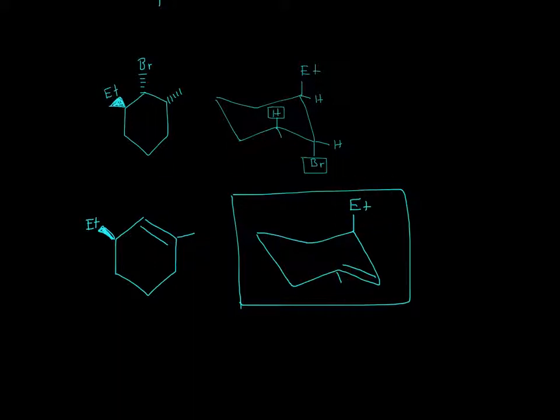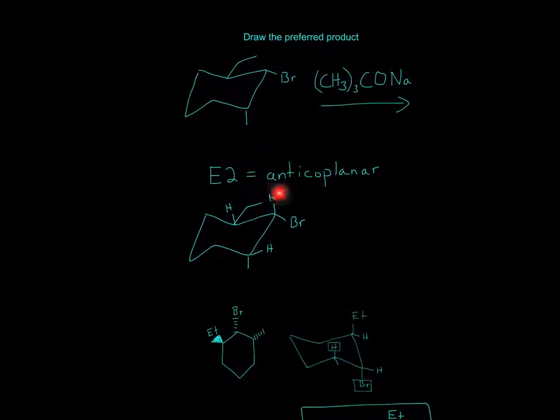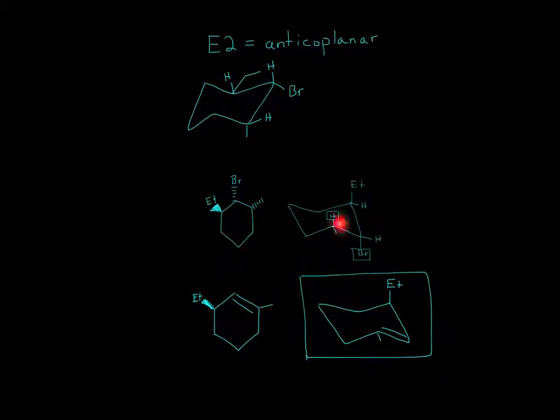So, the key thing here is just to make sure that your E2 reaction is anti-coplanar. In this case, we can't really tell if it's opposite. But, when we do a ring flip, we can see that the hydrogen is straight up, and then the bromine is straight down. So, that means it has to be E2 for this side. That's why the double bond forms right here. So, I hope that helped, and thanks for watching.